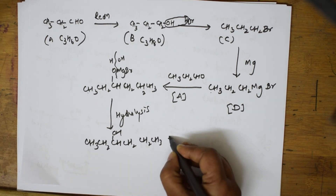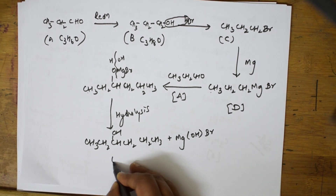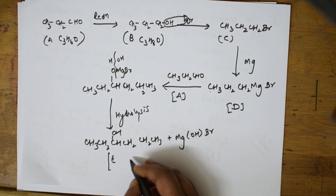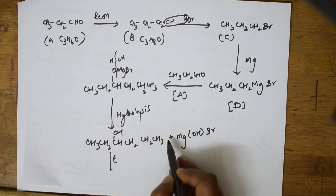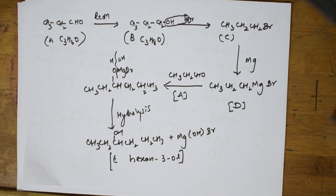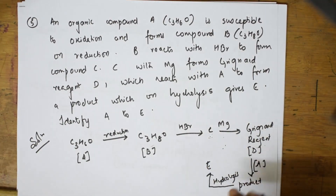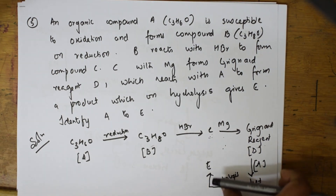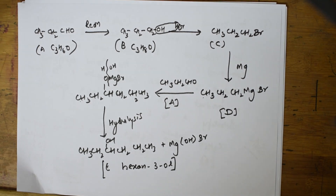The final product E is CH₃CH₂CH(OH)CH₂CH₂CH₃ plus MgOHBr. The name of compound E: counting 1-2-3-4-5-6 carbons, it is a hexanol with the OH at the third carbon — hexan-3-ol. So A is propanal, B is propan-1-ol, C is 1-bromopropane, D is propyl magnesium bromide, and E is hexan-3-ol. I read the question, made a summary of facts, picked up one clue, and solved the whole thing.